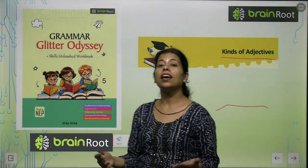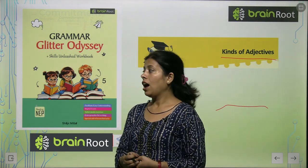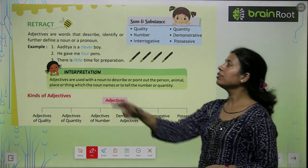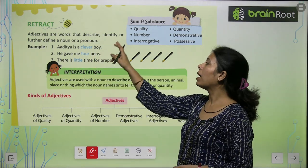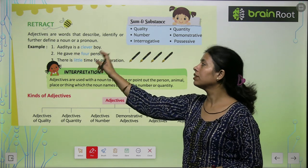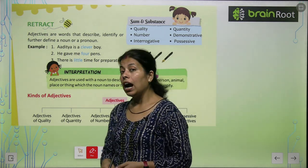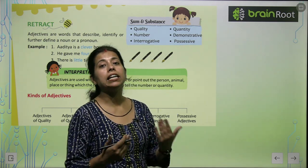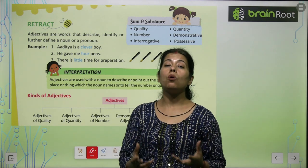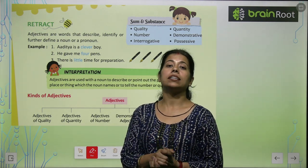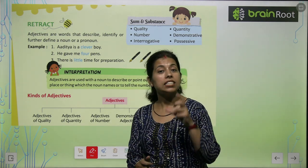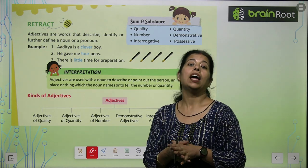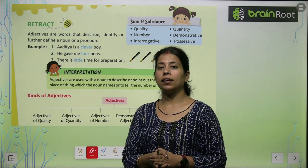What is an adjective? We will read about it in this chapter. Adjectives are words that describe, identify, or further define a noun or pronoun. हम noun और pronoun को define करने के लिए कुछ words sentence में add करते हैं, और जो वो words होते हैं, उन्हें हम adjectives बोलते हैं।